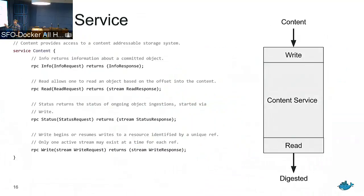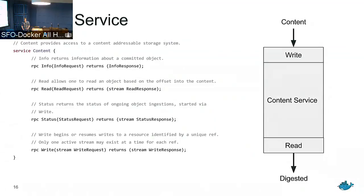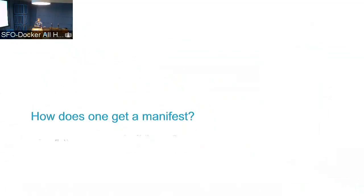The 'status' method is for ongoing writes — where 'info' is about immutable blobs, status is about in-progress writes. The progress bars inside Docker — status is what you use to implement that in containerd. You can actually query all active writes going on in the content store. This content store is a centralized location to coordinate the writes occurring at any time.